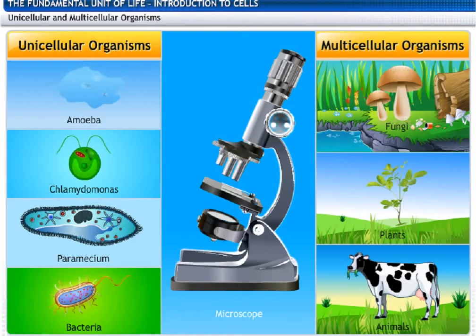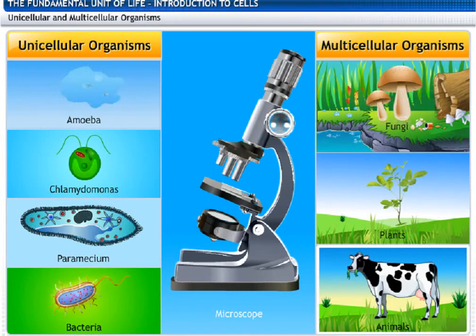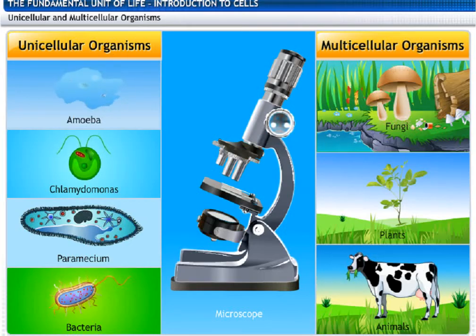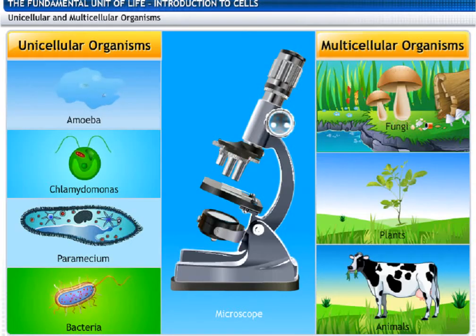On the other hand, in organisms like fungi, plants, and animals, multiple cells group together to form tissues. These organisms are called multicellular organisms.